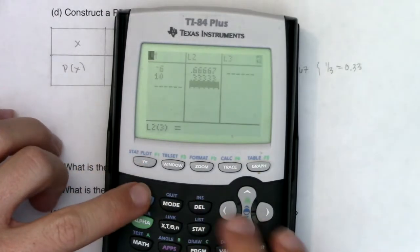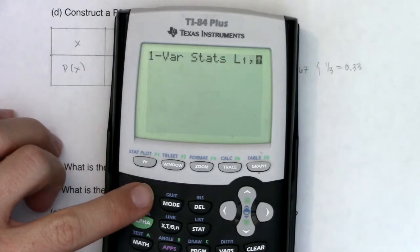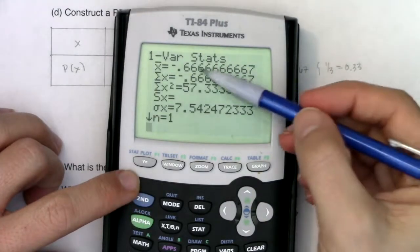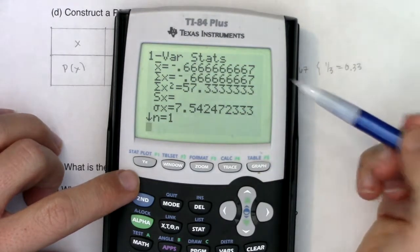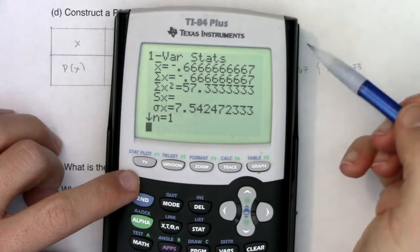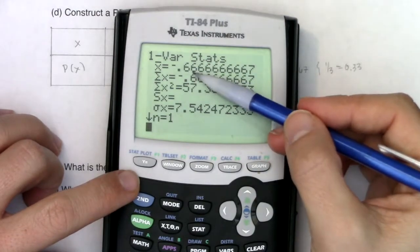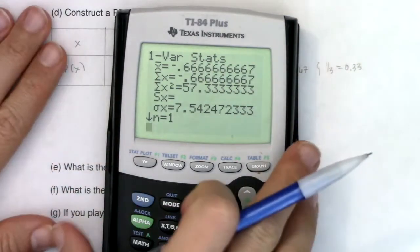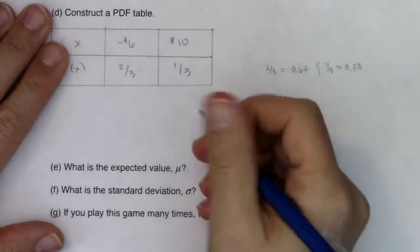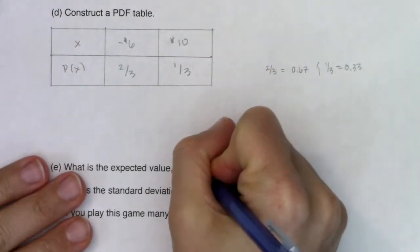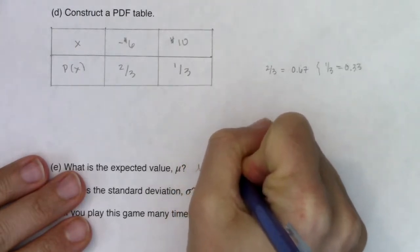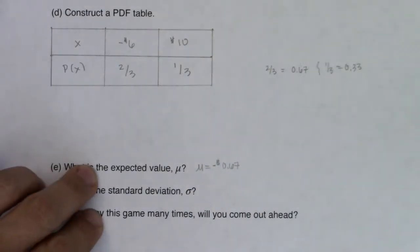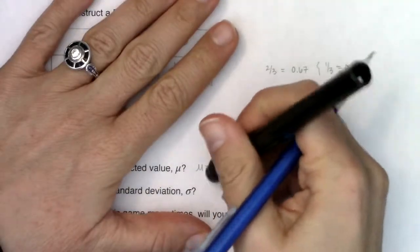So if I do this, I go back to my home screen, one-var stats, L1, L2. And we can see that the average, the average winnings are negative 67 cents. So if you play this game repeatedly with this bias coin, on average, you will lose 67 cents. So let's write that down. So we've got an average of negative 67 cents.